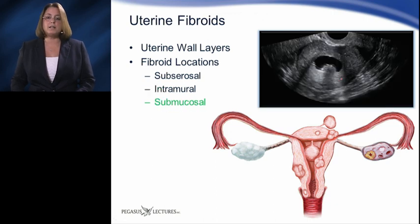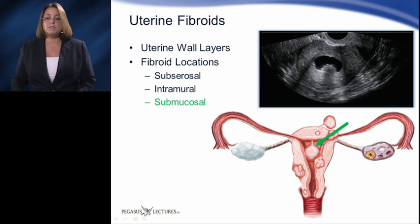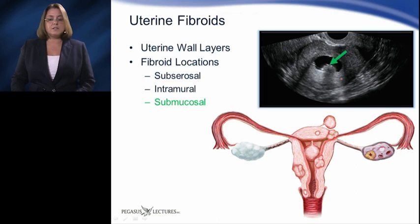Submucosal or subendometrial fibroids develop under the lining of the uterine cavity. They typically originate as intramural fibroids that gradually grow toward the endometrial cavity. Similar to subserosal fibroids, some submucosal fibroids may be attached to the uterus by a stem or stalk — these are called pedunculated submucosal fibroids. This ultrasound image demonstrates a submucosal fibroid as seen during a sonohistogram procedure.